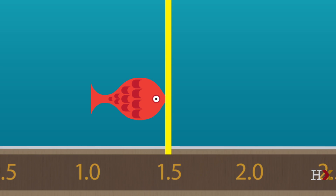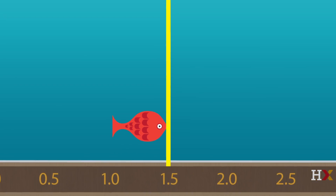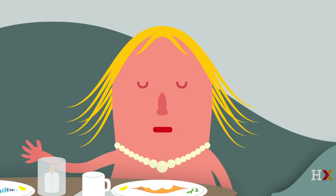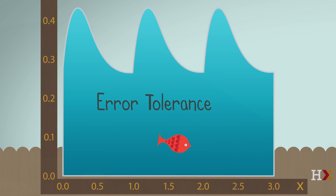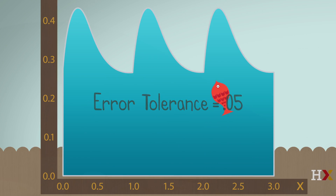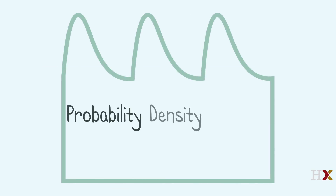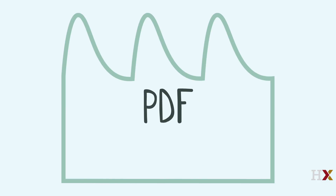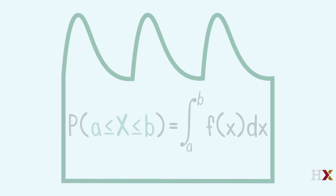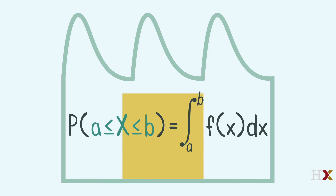But as a practical matter, what's the probability that Randi is close to 1.5? We should specify an error tolerance — how close is close? If, say, we want Randi to be within 0.05 of 1.5, we can look at the probability that she is between 1.45 and 1.55. Just find the area under the curve from 1.45 to 1.55. The curve formed by the tank is a probability density function, also known as a PDF — not to be confused with portable document format. A PDF is a non-negative function such that the area under the curve is 1. For a continuous random variable x, the probability that x is in a particular interval is the area under the PDF curve over that interval.